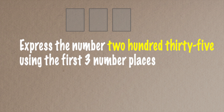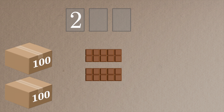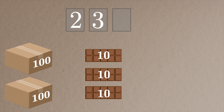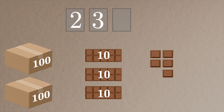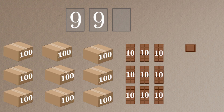Let's try an example. If I had 235 pieces of chocolate, I would group together the first 200 pieces into two groups of 100, putting a two in my hundreds place. The next 30 pieces I would group into three groups of 10 and put a three in my tens place. I still have five single pieces left over so I put a five in my ones place. And we can keep adding more and more chocolate all the way up to 999 pieces.